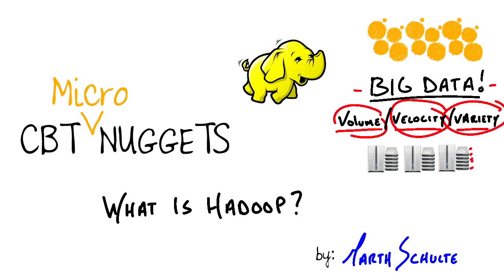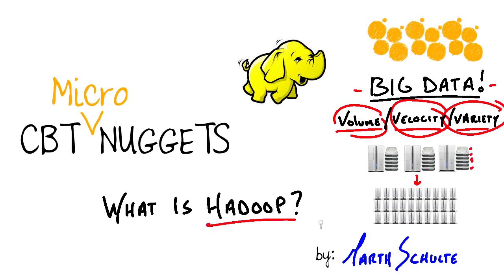On the flip side with distributed computing, say we had 100 low-to-middle-end machines, each with a disk attached — it would take about two and a half minutes to read that same terabyte of data. This is where Hadoop comes into play. It's a software-based distributed computing model, an open-source framework built in Java. The real beauty of Hadoop is that it maximizes our strength — the CPU — and mitigates our weaknesses — disk transfer rates and network bandwidth — by bringing computation to the data. Let's go check out the inner workings of Hadoop and see what it's all about.